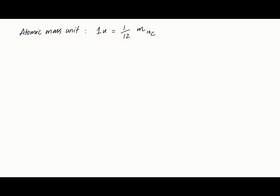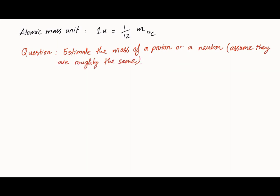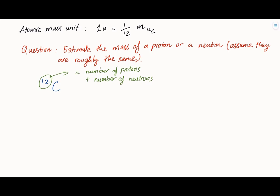In the first part of this video, we are going to use that definition to estimate the mass of a proton or a neutron. Now, what does the number 12 in front of carbon really mean? Yes, it indicates a specific type of carbon isotope, but it is also the sum of the number of protons and neutrons in that carbon atom.